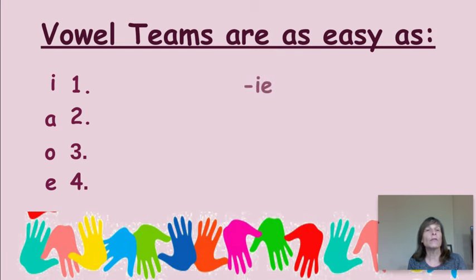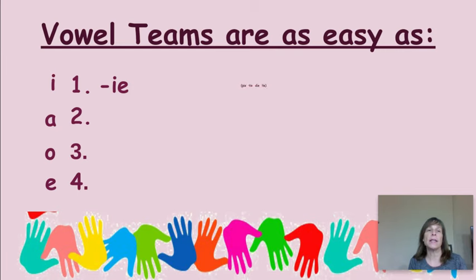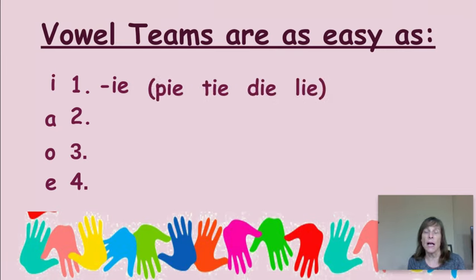Let's take a look at the first team: I. Dash IE says I in words like pie, tie, die, and lie. They're the only four words that you're going to hear the I sound as represented by IE.